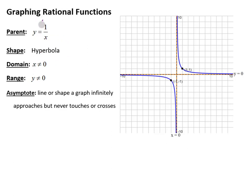The parent function, the most basic one we can graph, is just 1 over x, and that is graphed over here at the right. You can see this is a very strange-looking graph. The blue curvy parts are the parts of the actual graph, and these dashed lines are something called asymptotes. This general shape is called a hyperbola. Hyperbolas always have these little shapes that will get closer and closer to some lines, called asymptotes.